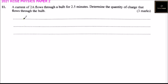Question number 11: A current of 2 amperes flows through a bulb for 2.5 minutes. Determine the quantity of charge that flows through the bulb. This question is worth 3 marks. Charge, represented by Q, equals current multiplied by time.